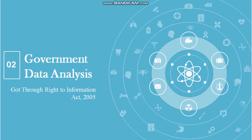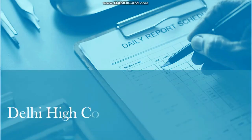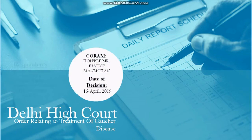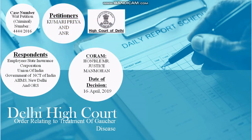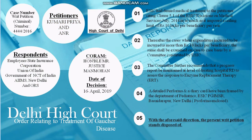Delhi High Court order relating to treatment of Gaucher disease: Petitioners Kumari Priya and ANR versus Respondents Employees State Insurance Corporation, Union of India, Government of NCT of Delhi-AIIMS, New Delhi, and others. ESIC had denied medical treatment to the petitioners citing Clause 5.1 of the ESIC decisions on medical services (July 2014), which imposed a ceiling limit of Rs. 10 lakhs per beneficiary per year. Cases where expenditure exceeds Rs. 1.0 lakh per beneficiary shall be examined on a case-to-case basis by a committee constituted by ESIC.